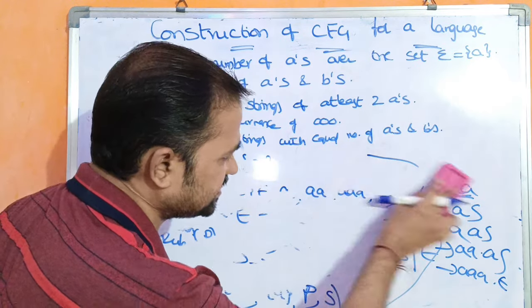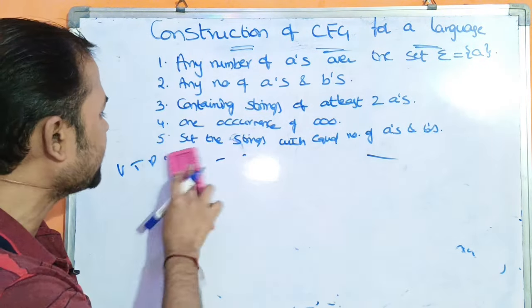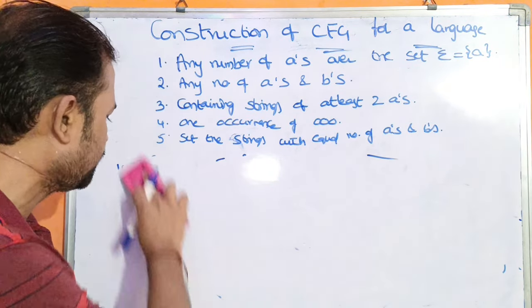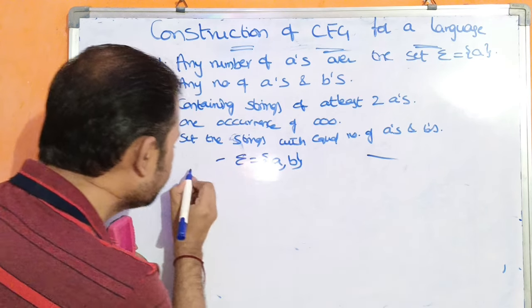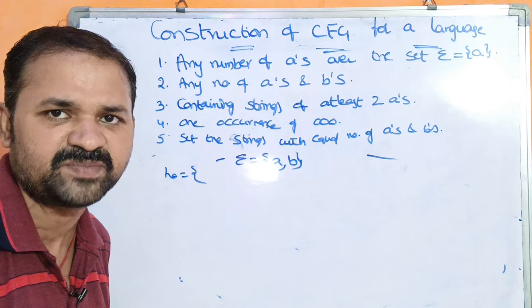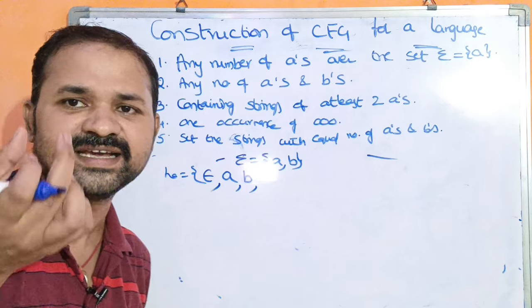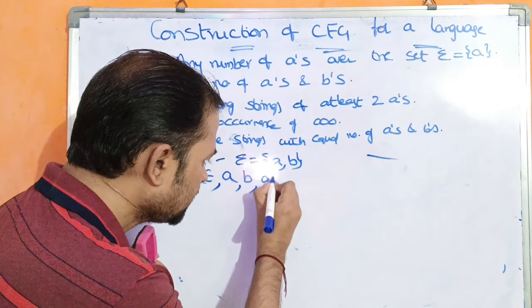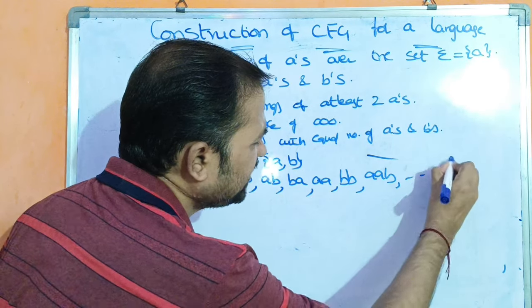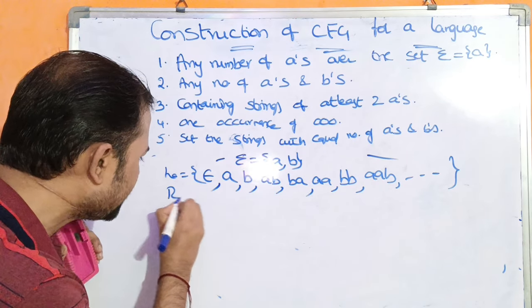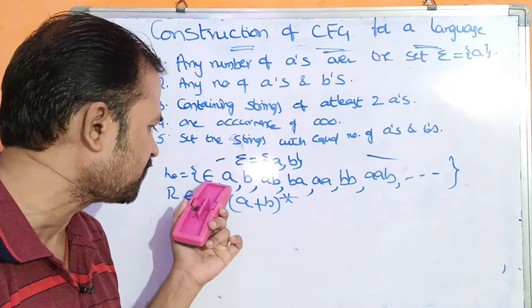Now let us see the second example: construct CFG for a language having any number of A's and B's. Here we have A's and B's, so the input alphabet contains two symbols: sigma = {A, B}. The language L includes: epsilon (zero occurrences), single A, single B, and length-2 strings like AB, BA, AA, BB, and so on. The regular expression for this language is (A+B)*, meaning any number of A's and B's including zero occurrences, which is epsilon.